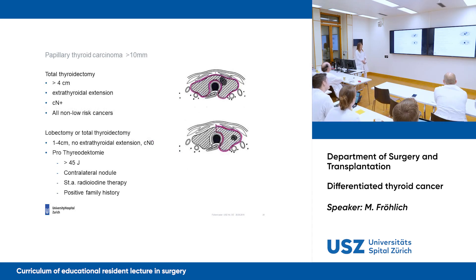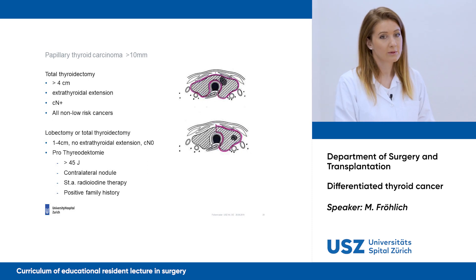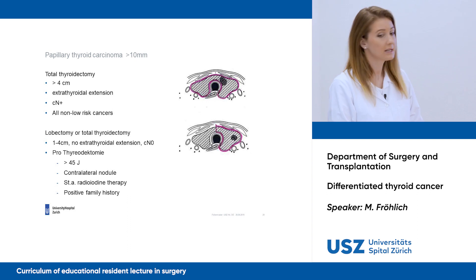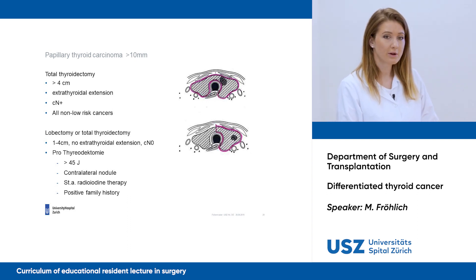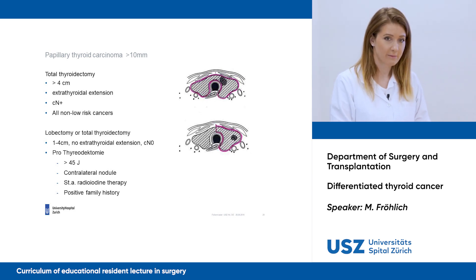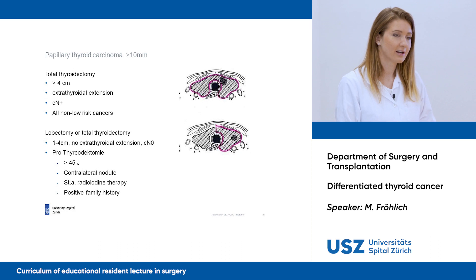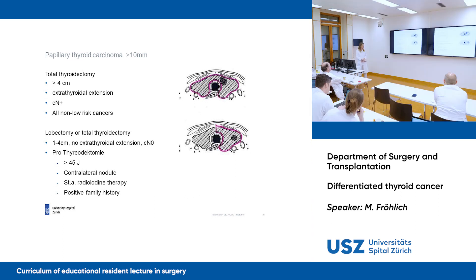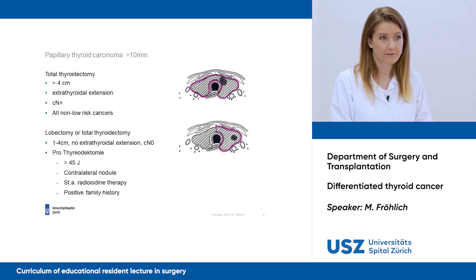If we have papillary thyroid carcinoma bigger than one centimeter, we should go for total thyroidectomy if the tumor is bigger than four centimeters, if there is extrathyroidal extension, or if we have positive lymph nodes. For a smaller nodule — one to four centimeters — without extrathyroidal extension and no suspicion for lymph nodes, we can also discuss a hemithyroidectomy. However, some factors favor total thyroidectomy: age over 45 years, central nodules, status after radioiodine therapy, or positive family history.